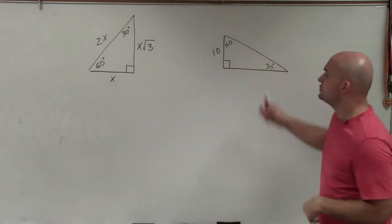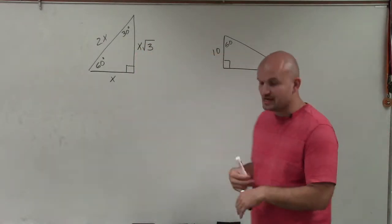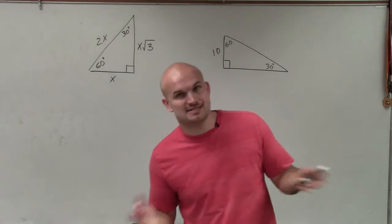Welcome ladies and gentlemen. What I'd like to do is show you how to find the missing sides of a special right triangle. In this case, it's a 30-60-90.